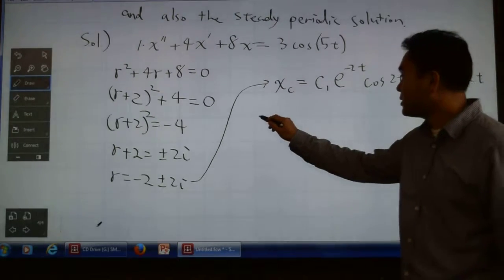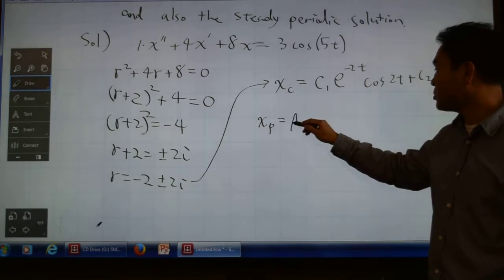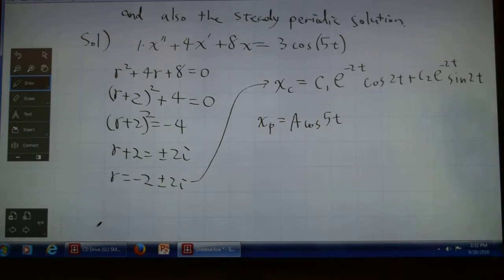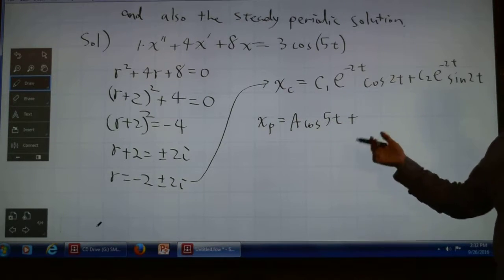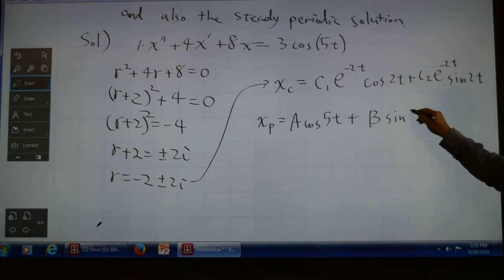Now what about x_p? I have cos(5t), so I should include that. What else should I include? sin(5t), because if you differentiate cosine, you get sine. So x_p = A cos(5t) + B sin(5t).